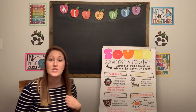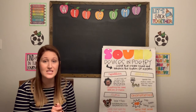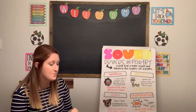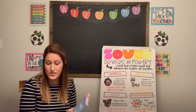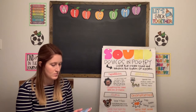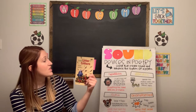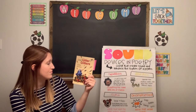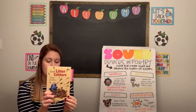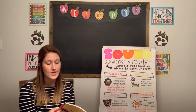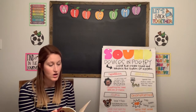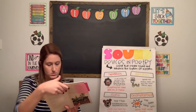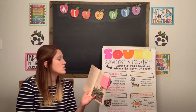The book we're going to be reading today is called Leaf Litter Critters, written by Leslie Bouillon. This is a collection of poems all about some insects. As we read and explore these different poems, we're going to be looking to see if we can find some of these sound devices. Let's start with our first poem.